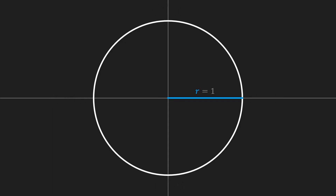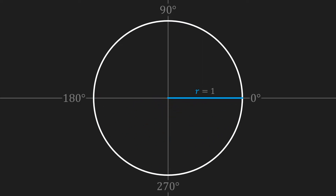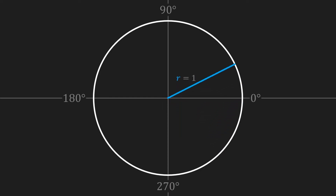We can also assign some angles starting at 0 degrees and increasing counterclockwise to 90 degrees, 180 degrees, 270 degrees, and then a full circle contains 360 degrees. If we move clockwise we get a negative angle — in this case an angle of negative 45 degrees — and if we move counterclockwise we get positive angles, in this case an angle of 45 degrees.